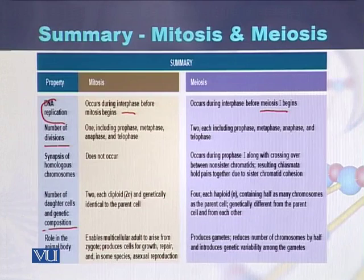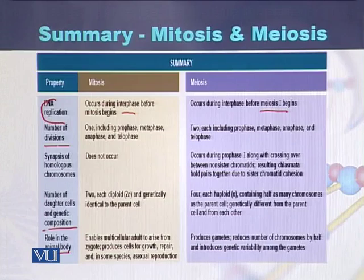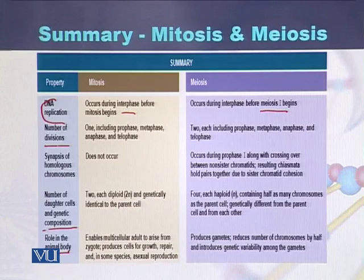Role in the animal body: mitosis enables a multicellular adult to arise from the zygote. In case of meiosis, it produces gametes, and the number of chromosomes becomes half during the formation of sperm and eggs.